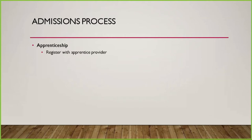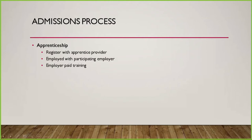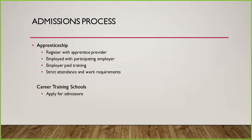For apprenticeship programs, to get admitted you register with an apprenticeship provider and you are employed with a participating employer. You also get paid for your training — you attend training and school simultaneously. The attendance and work requirements are really strict. For career training schools, you just apply for admissions and can pace your training. You might also be eligible to receive financial aid funds. One example could be Lincoln Tech.